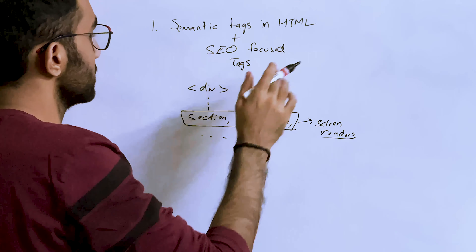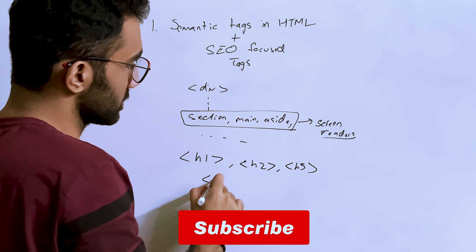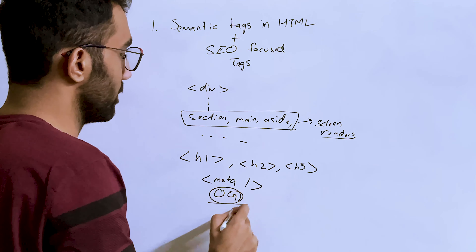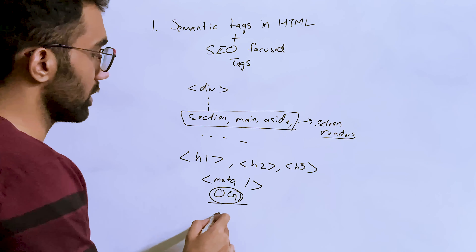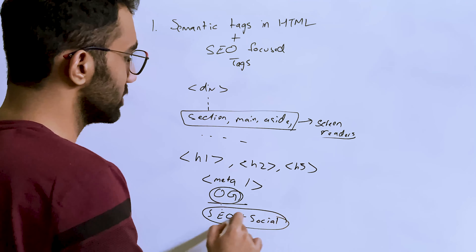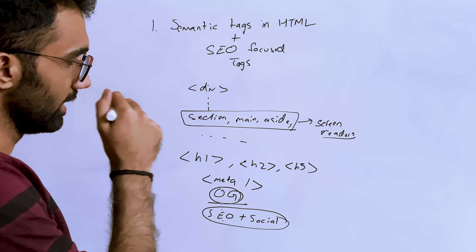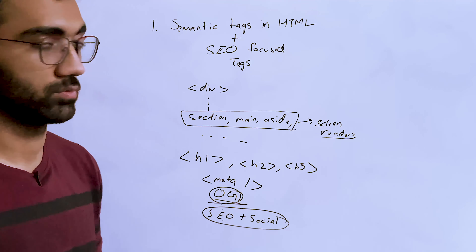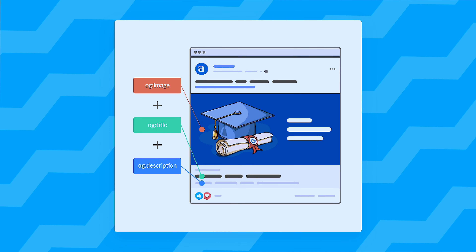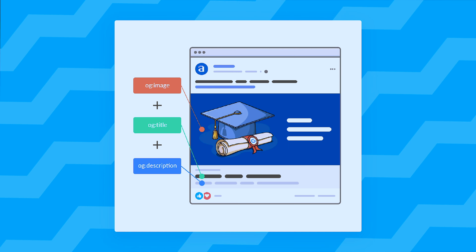When I say SEO focus tags, I mean using the correct h1, h2, h3 headings and meta tags for description and the page title, and making sure you have Open Graph tags enabled so your HTML page works great on social media. A lot of people don't know about Open Graph tags, which are used by Twitter, Facebook, and pretty much all social media websites — that's what generates the preview with a title, description, and image when you share a link.